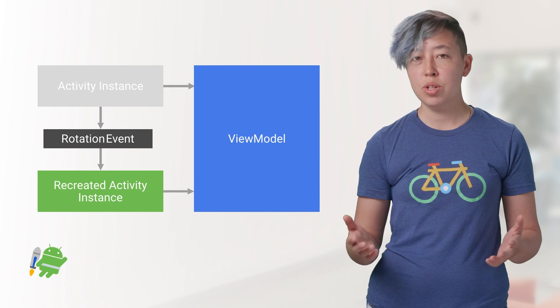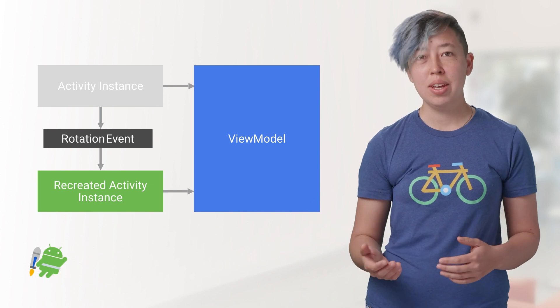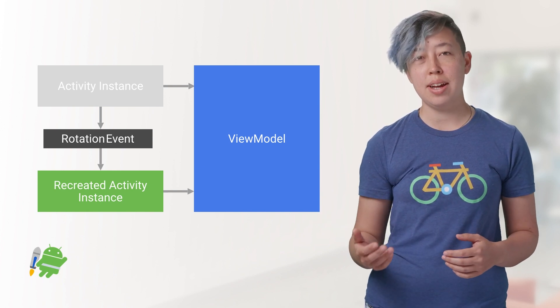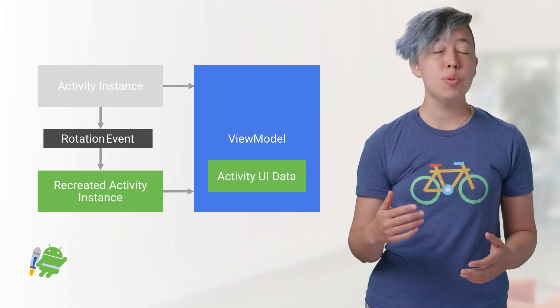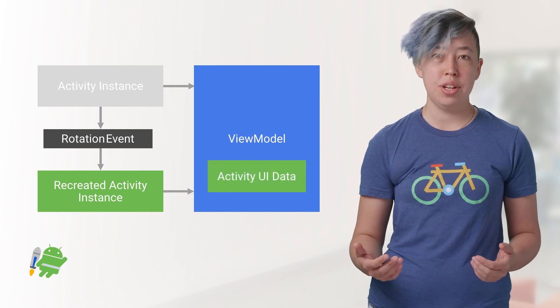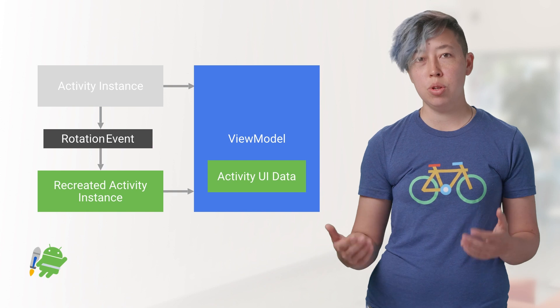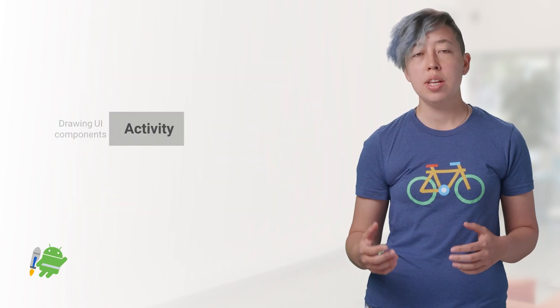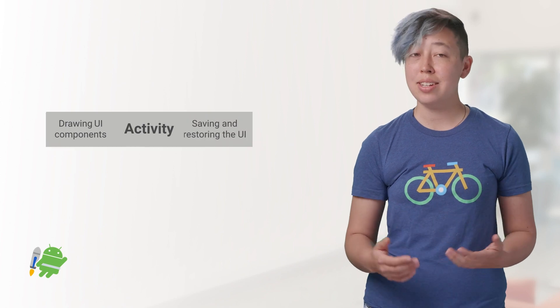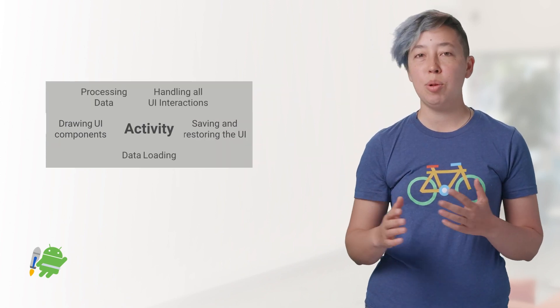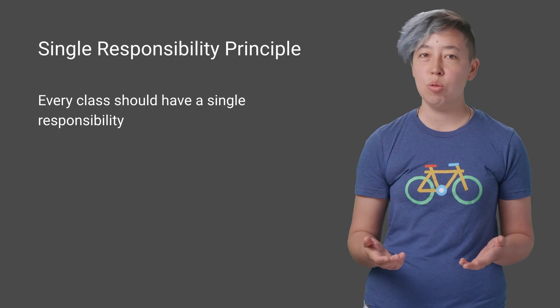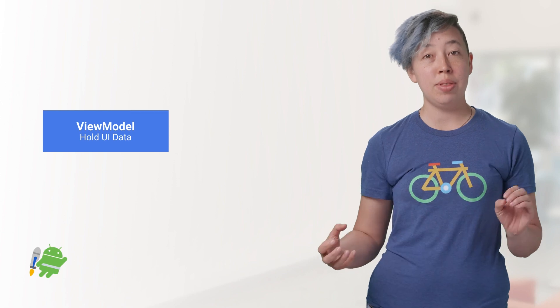Enter the ViewModel, which survives configuration changes. Instead of storing all of your UI data in your activity, put it in the ViewModel instead. This helps with configuration changes, but it's also just general good software design. One common pitfall when developing for Android is putting a lot of variables, logic, and data into your activities and fragments. This creates a large unmaintainable mess of a class and violates the single responsibility principle. You can use ViewModels to easily divide out that responsibility.